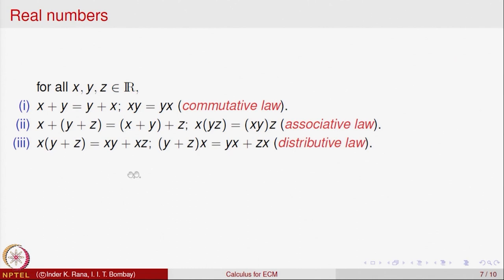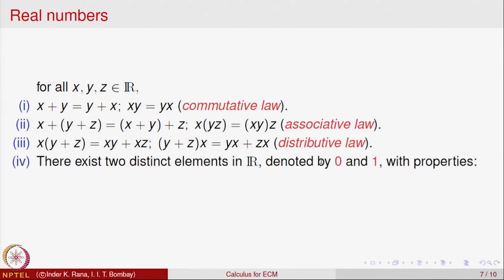The next is the distributive property: multiplication and addition distribute over each other. That means x multiplied by (y plus z), if you multiply the sum of y plus z with x, that is the same as multiplying x with y first, then multiplying x with z, and adding those two products to get x·y plus x·z. So multiplication distributes over addition. Similarly, (y plus z)·x equals y·x plus z·x — this is called the distributive property.